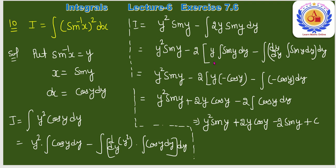∫y·sin y dy पर फिर by parts apply: y·(−cos y) − ∫1·(−cos y)dy = −y·cos y + sin y। So overall: y²·sin y − 2[−y·cos y + sin y] + C = y²·sin y + 2y·cos y − 2·sin y + C।